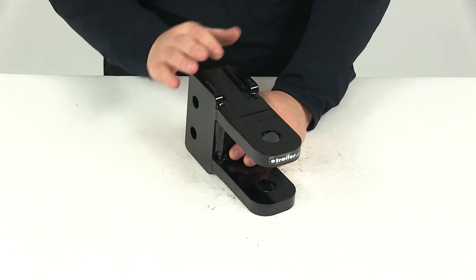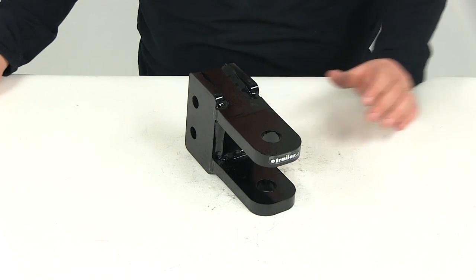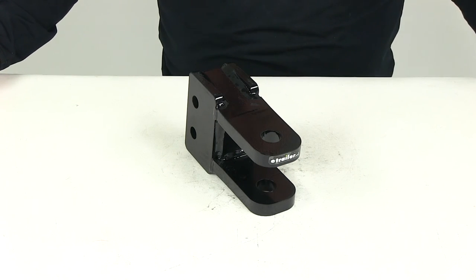That's going to do it for today's review of part number DM12676-30. This is the Demco two tang clevis for adjustable channel mounts.